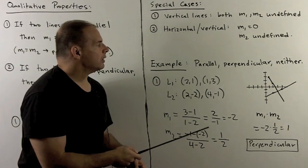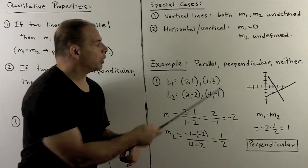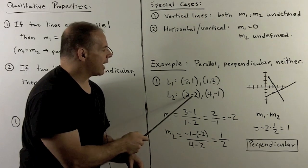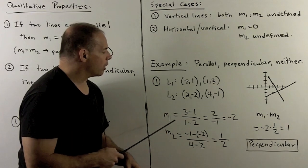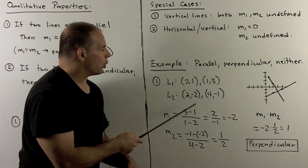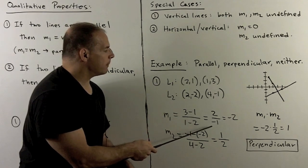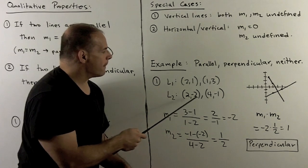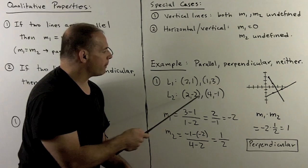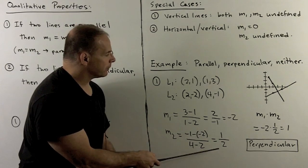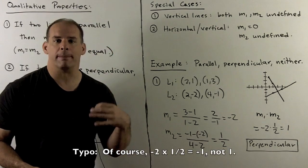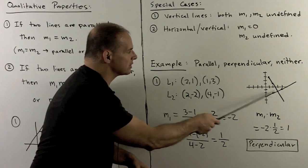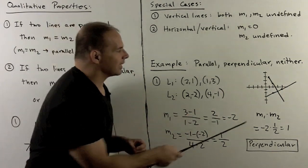Let's look at some examples — are the lines parallel, perpendicular, or neither? Take L1 through (2, 1) and (1, 3), and L2 through (2, minus 2) and (4, minus 1). For L1: slope m1 = (3 minus 1) over (1 minus 2) = 2 over minus 1 = minus 2. For L2: slope m2 = (minus 1 minus minus 2) over (4 minus 2) = 1 over 2, which is one half. The product of minus 2 and one half is minus 1, so these two lines are perpendicular. Plotting the points confirms a 90-degree angle.